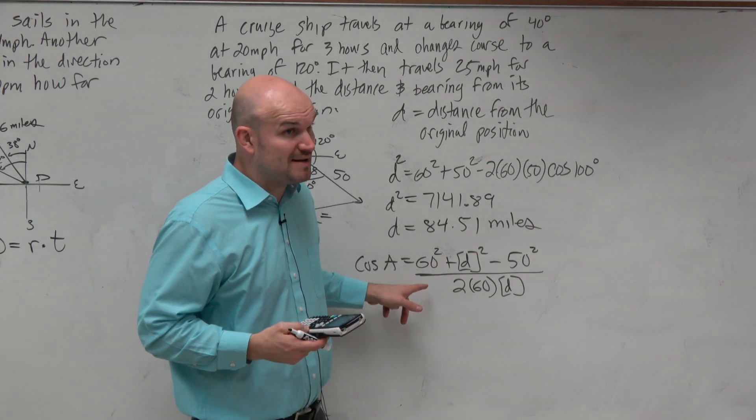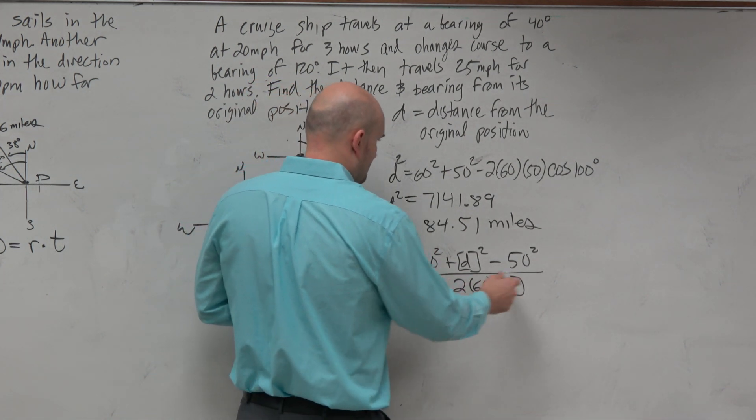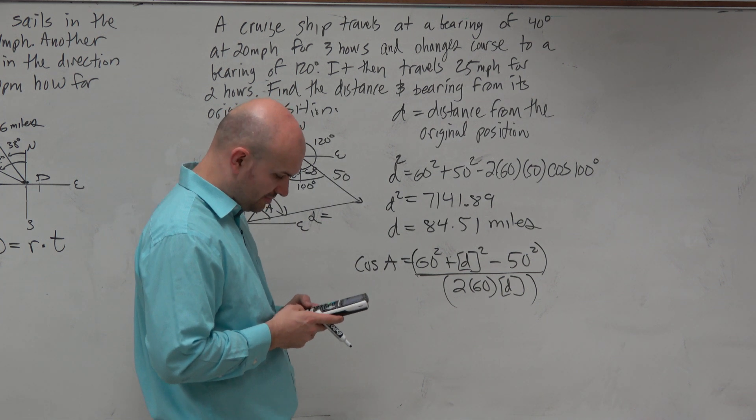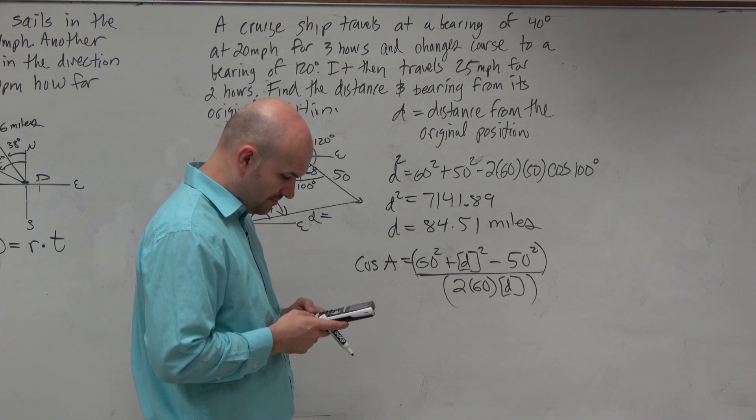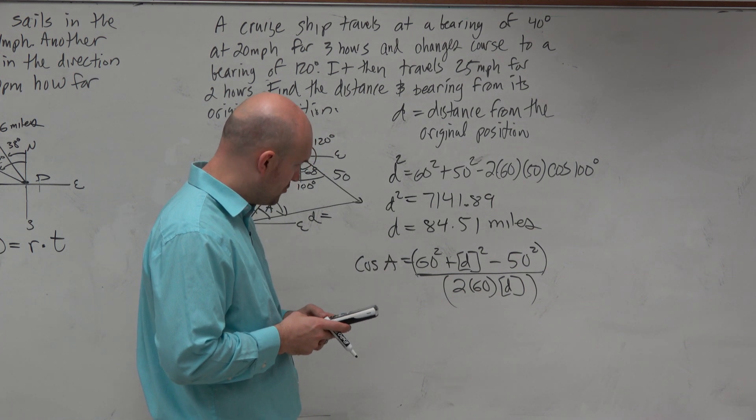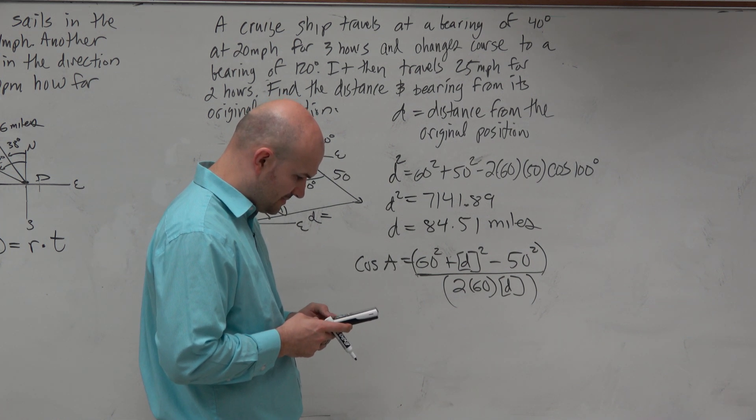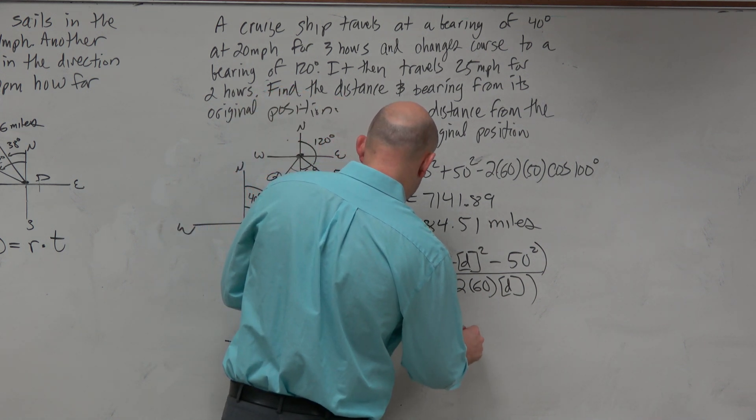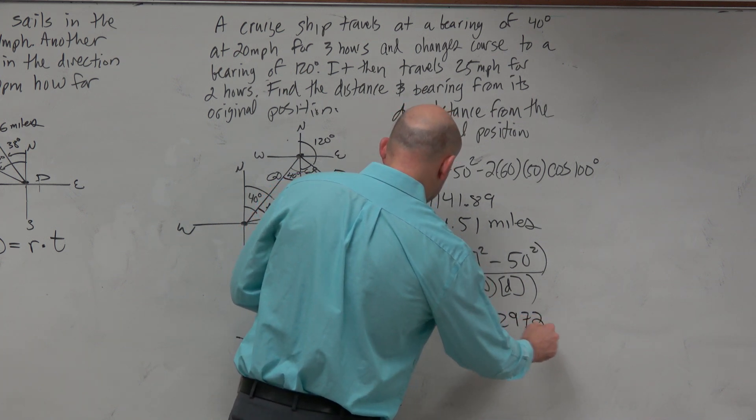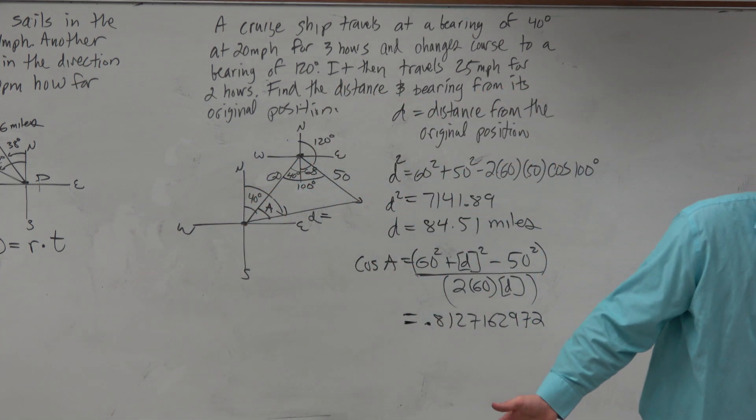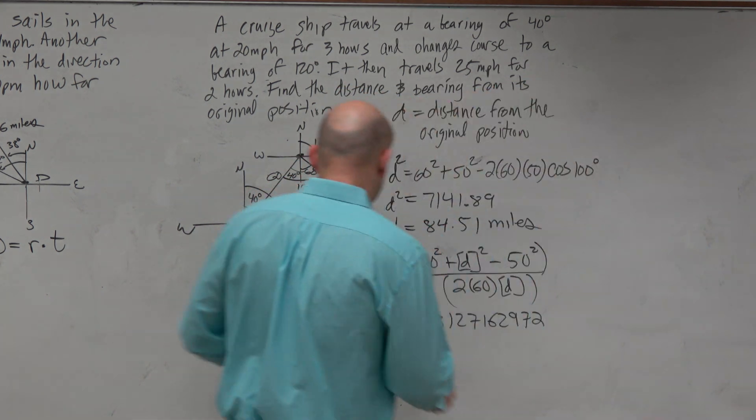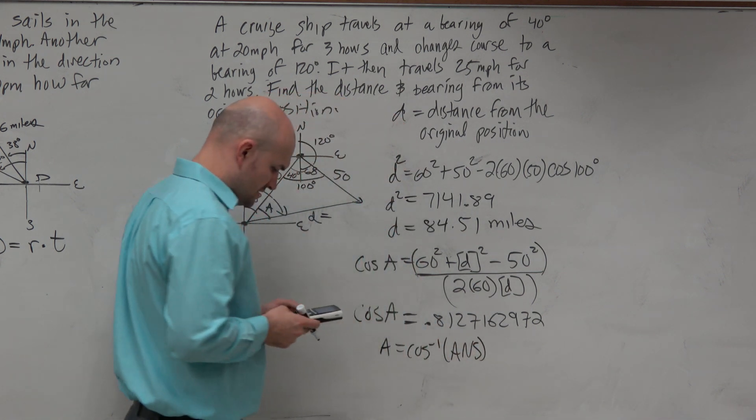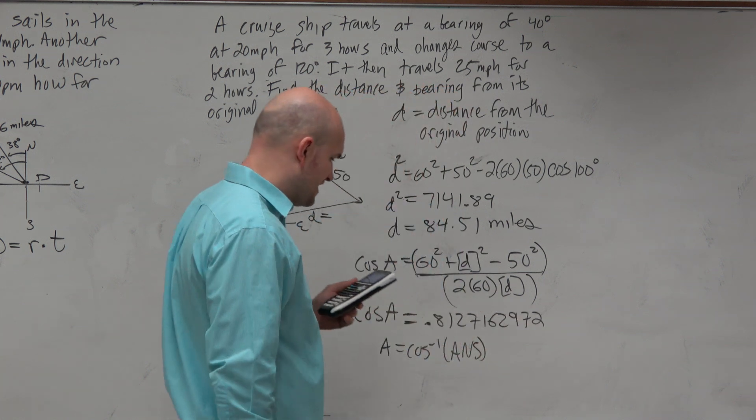Now remember order of operations matters here because we're dividing. So when you type this in, make sure you use parentheses. So let's do parentheses here, and I'll do 60 squared plus alpha d squared minus 50 squared, closed parentheses, divided by open parentheses, 2 times 60 times alpha d. And I get 0.8127162972. Does that make sense for my angle? No, because that's the cosine of my angle. So when I wake up, I just do A equals the cosine inverse of that last answer. So I just do cosine inverse of the last answer and I get 35.6.